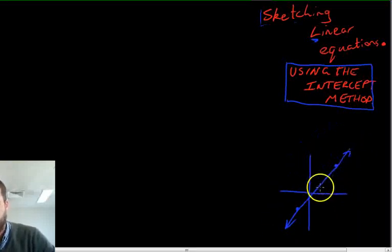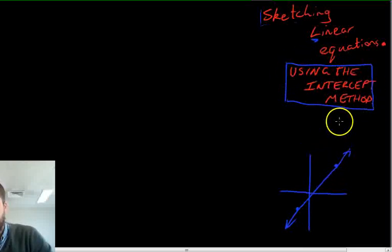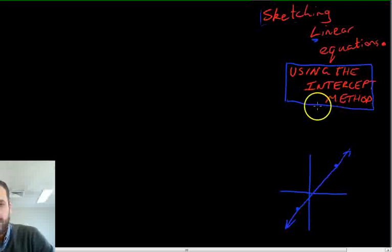So we only need two points on our line, that's important to understand. Now when we use the intercept method, those two points are going to be the intercepts, the x-intercept and the y-intercept. So there's our basic idea. Let's give one a try so you can see what I'm talking about.